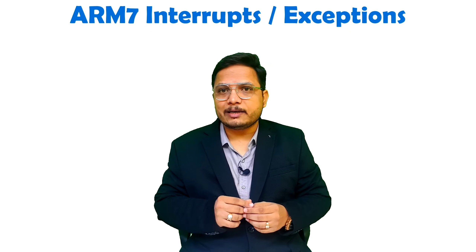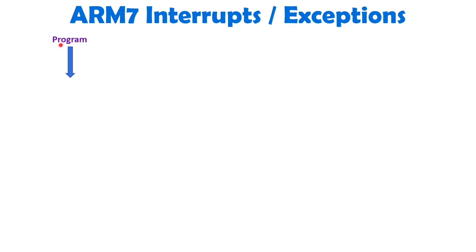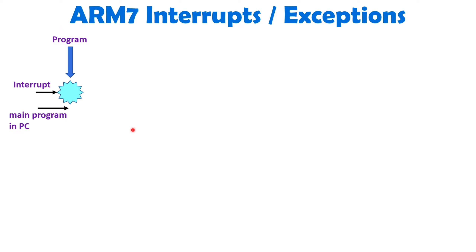Those steps are happening with respect to the operating modes of ARM7. With the main program, the program counter is there, which will be indicating the address of the next instruction. Once you provide service to this interrupt, the program control should come back after servicing. So once you give service to this interrupt and after completion of service, you should come back at the address pointed by the program counter right now.